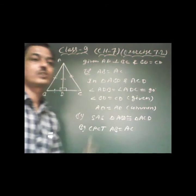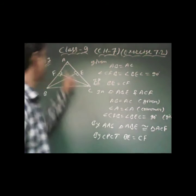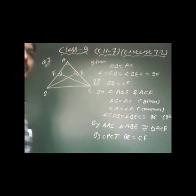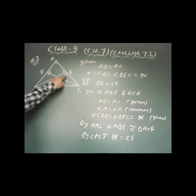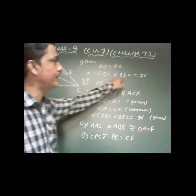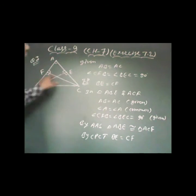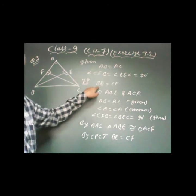In question number 3, in triangle ABC, AB is equal to AC is given, and BD and CF are altitudes. Since they are altitudes, angle ABD and angle ACF are each 90 degrees. We need to prove these two altitudes are equal, meaning BD is equal to CF.